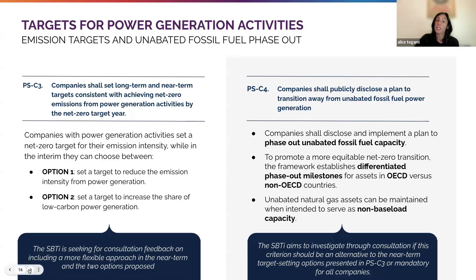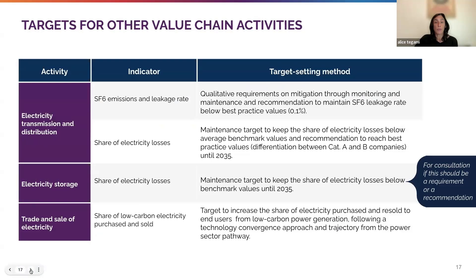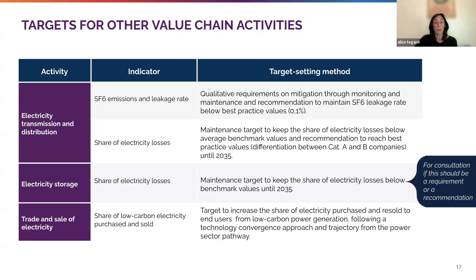For the other activities in scope of the power standard, this slide summarizes the proposal for companies with transmission and distribution, storage, trade and retail activities. For companies with electricity transmission and distribution, the requirements focus on mitigation of SF6 emissions and leakages, mainly through monitoring and maintenance campaigns, and minimization of electricity losses. Similarly, for storage activities, a maintenance target is proposed on the share of electricity losses, and we're seeking consultation feedback on whether this should be a requirement or a recommendation. Finally, for companies with retail activities, the standard proposes setting targets to increase the share of electricity that is purchased and resold from low-carbon power generation sources, with a metric and target setting method similar to the one described for power generation activities.